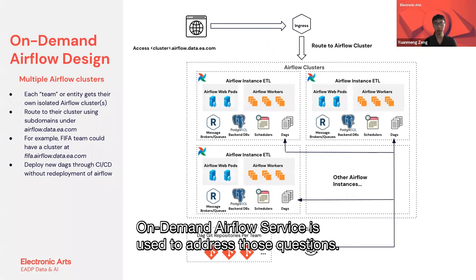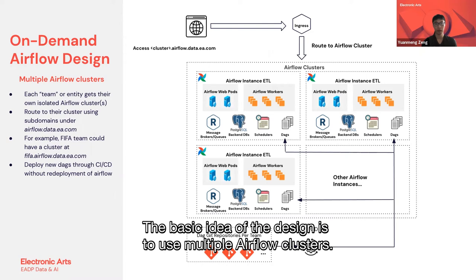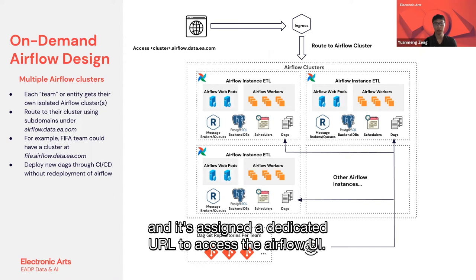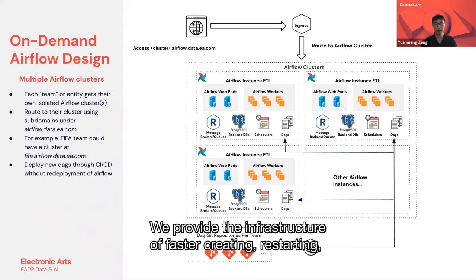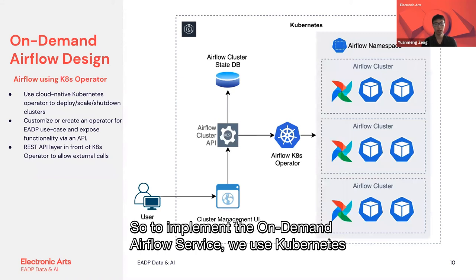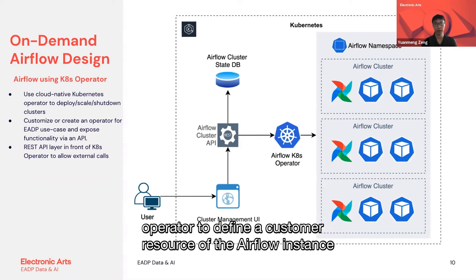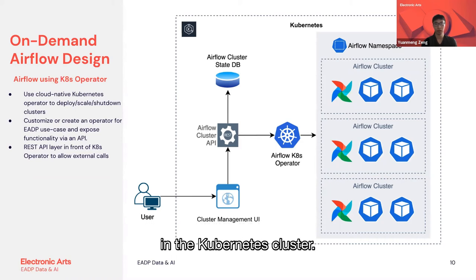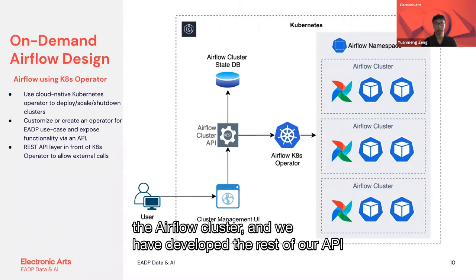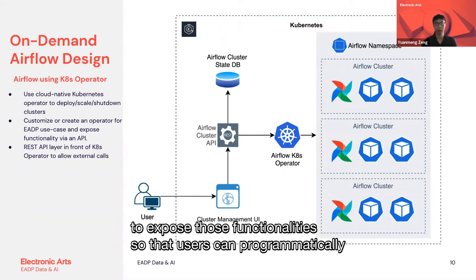The on-demand Airflow service is designed to address those problems. The basic idea is to use multiple Airflow clusters — each team gets its own isolated Airflow cluster and is assigned a dedicated URL to access the Airflow UI. We provide the infrastructure for fast creation, restarting, and deletion of an Airflow cluster. To implement this, we use a Kubernetes operator to define a custom resource for the Airflow instance in the Kubernetes cluster. The operator is responsible for deploying, scaling, and shutting down the Airflow cluster. We also deployed a REST API to expose those functionalities so that users can programmatically manage their cluster.